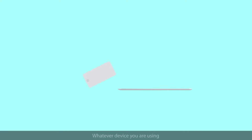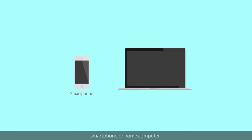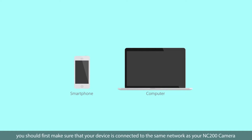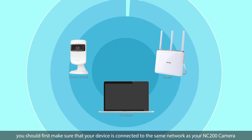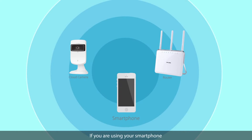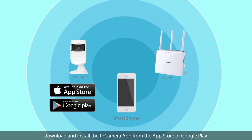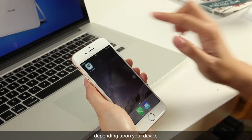Whatever device you are using, smartphone or home computer, you should first make sure that your device is connected to the same network as your NC200 camera. If you are using your smartphone, download and install the TP Camera app from the App Store or Google Play, depending upon your device.